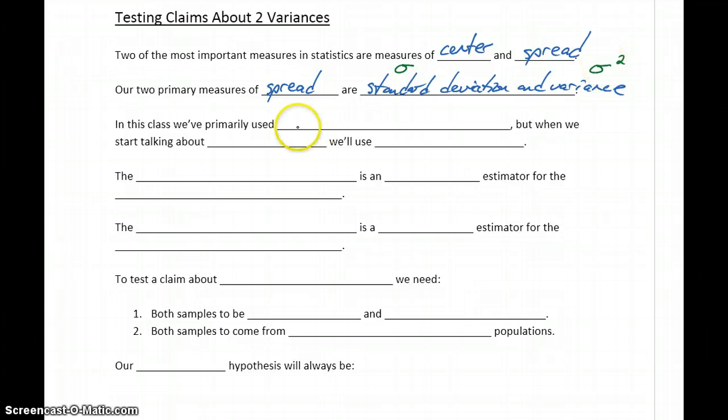So far in this class, we've primarily used standard deviation whenever we've talked about the spread of our data. It's a smaller number, so it makes more sense to talk about standard deviation. It also has the same units as our original data, so it has some advantages.